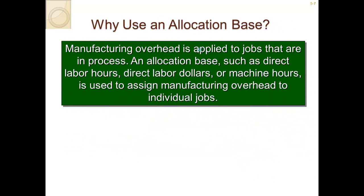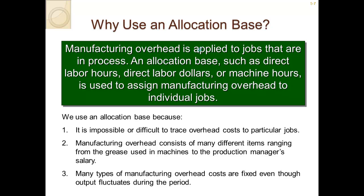Why use an allocation basis? Manufacturing overhead is applied to jobs that are in progress. The allocation basis — such as direct labor hours, direct labor dollars, or machine hours — is used to assign manufacturing overhead to individual jobs. It's very difficult to trace overhead to a particular job. For example, the grease used to maintain tools at a construction site can't be specifically traced to Elms. Also, many types of manufacturing overhead costs are fixed, even though output fluctuates.